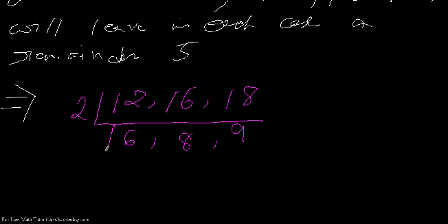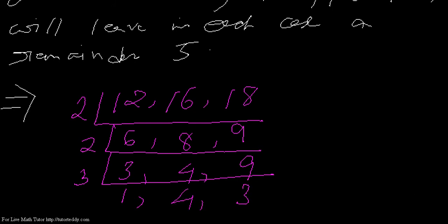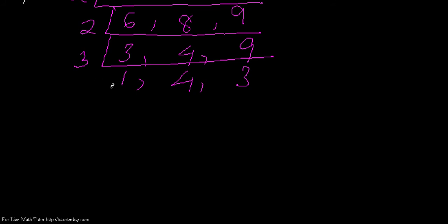Again I divide by two: three into six, four into eight, and nine remains. I have to divide by three now: three into three is one, four remains, and three into nine is three. Further I can't divide two numbers.